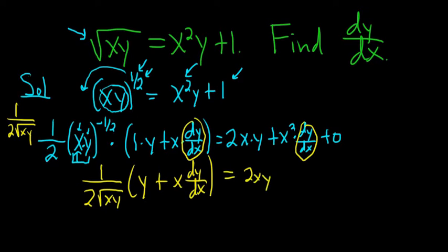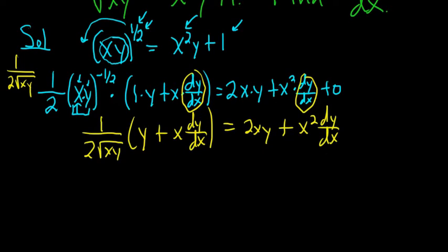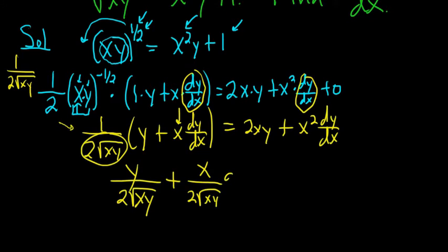And then here we have 2xy plus x squared dy/dx. I'm trying to think of what would be the best way to solve this. I guess we could distribute this piece. Or we could multiply everything by 2 square root xy. I'm going to go ahead and distribute this. So if we do that, we get y over 2 square root xy. This could be simplified here, this y and the square root y, but I'm going to leave it. And then here we have x over 2 square root xy dy/dx. Then here we simply have 2xy plus x squared dy/dx.